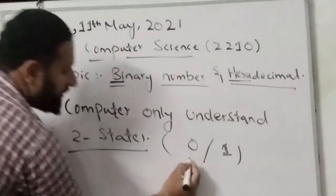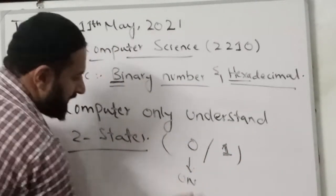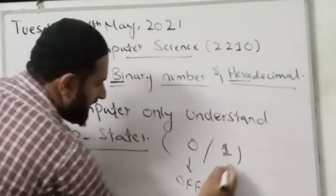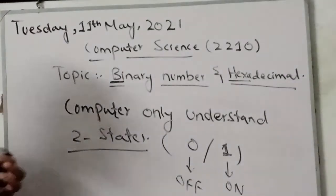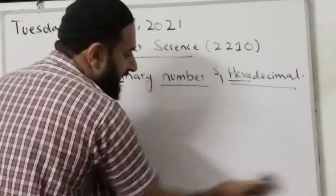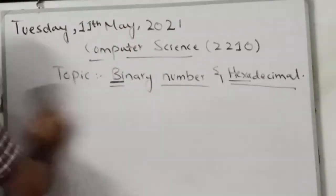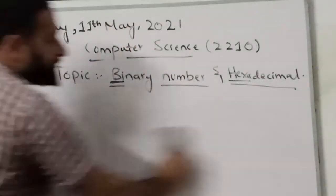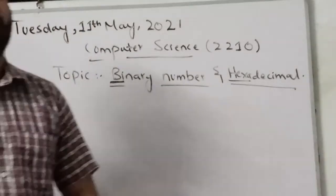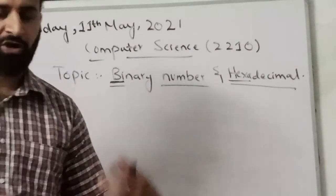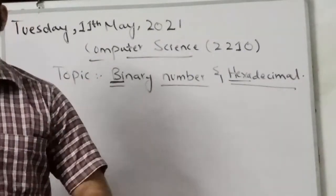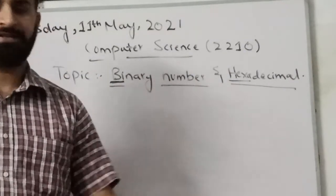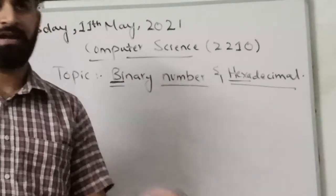Zero means off state, off position, and one means on position. The next thing is your all data which you save on your mobile phone, on our desktop, laptops, all that computer will convert it into a binary number and it will store it on your hard disk drive or SSD or HDD.